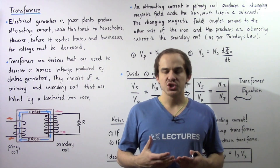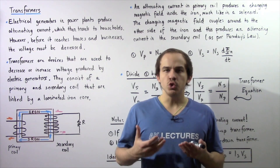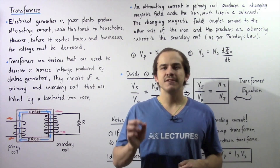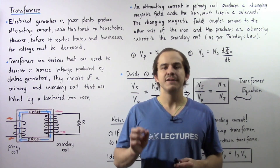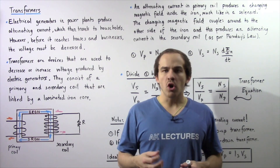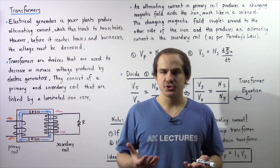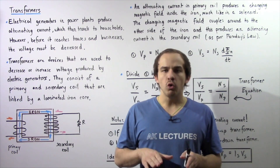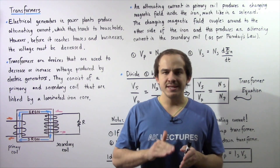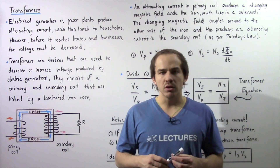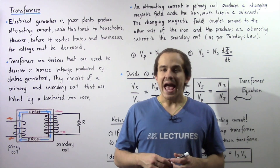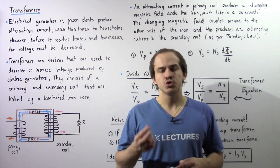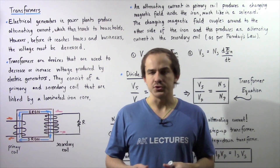Within power plants, the electric generators usually create an EMF that has a very high value. And before households and businesses can use that voltage, that voltage must be decreased within the power lines. The devices that decrease the voltage are known as transformers.